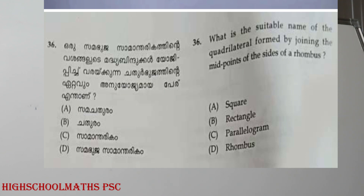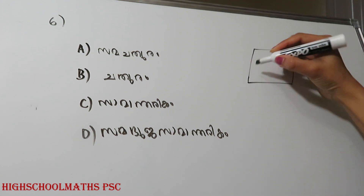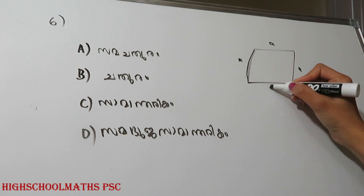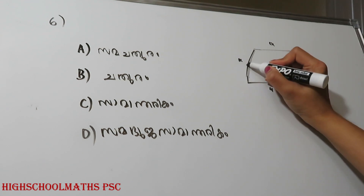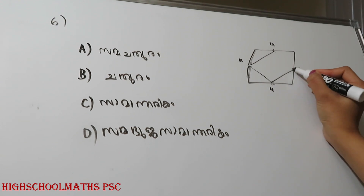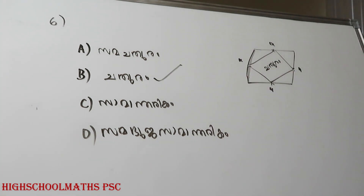The figure formed by joining the midpoints of the sides of a rhombus is: a rectangle, a parallelogram, or a rhombus. We use the midpoints of the rhombus. If you join the midpoints, you can see a parallelogram — specifically a rectangle — using the center points. The answer is option B.